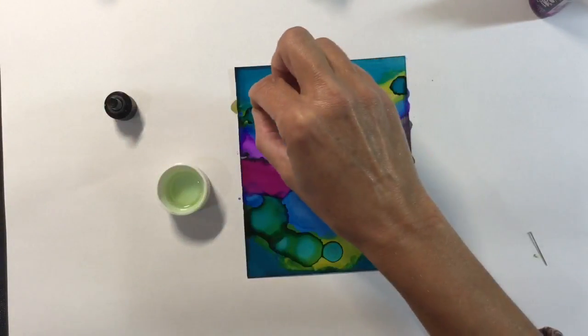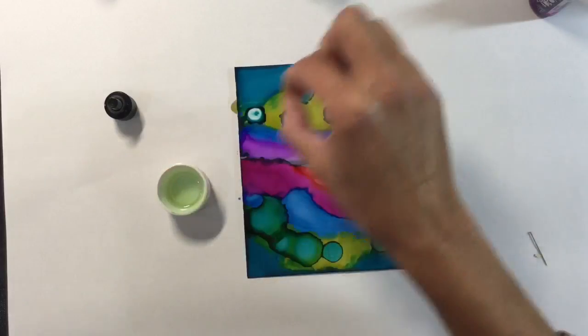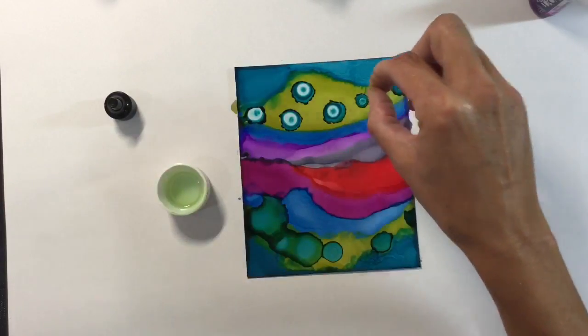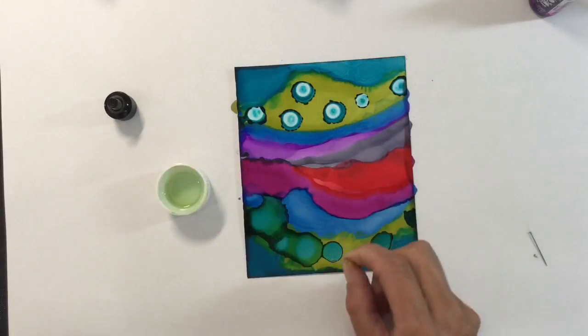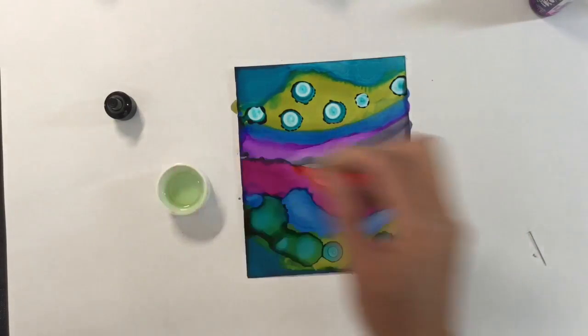Now I'm using the flat end of a dressmaker's pin to add small droplets of 99% isopropyl alcohol which bleaches the color and creates a really pretty visual effect.